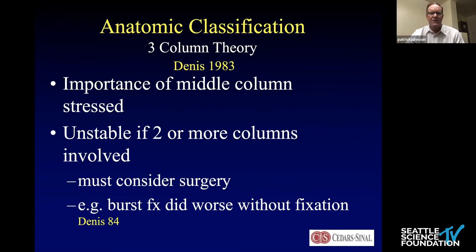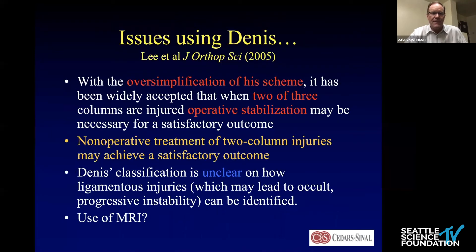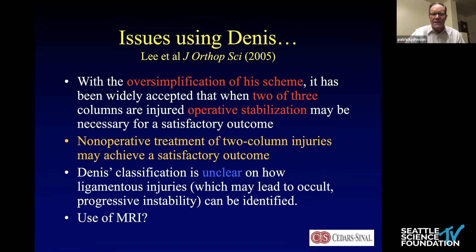With these anatomic classifications, importance was placed on the middle column as the most important part. If there was instability in two or more columns, there was an instability problem. The issue is that it kind of left us with an oversimplification — it didn't really address when operative stabilization was necessary, and non-operative treatment was not clearly defined either. So it left some things unanswered.